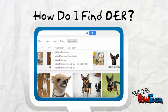For example, Google Image Search allows you to filter your results by usage rights.